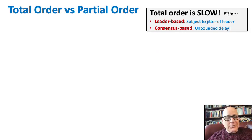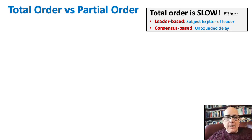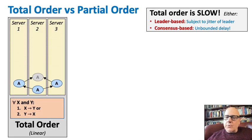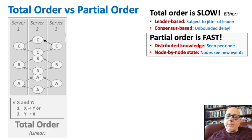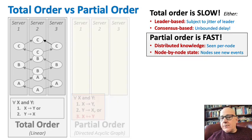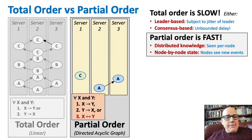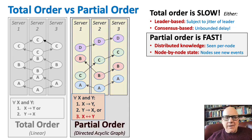Total order versus partial order: total order is slow. Either it's leader-based and that leader can jitter, or it's consensus-based and that can take unbounded time. Total order means either X is before Y or Y before X, and you have to see each one is permanently there before the next. That's slow. Partial order is fast — it's distributed knowledge on each node, node-by-node state as they see events. But it means either X is before Y, Y is before X, or X and Y are at the same time.